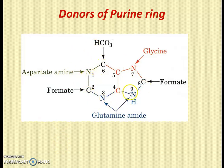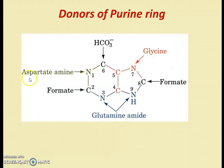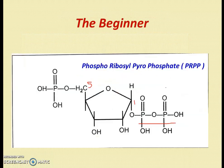The purine ring has nine atoms. Among them, atoms 4, 5, and 7 are donated by glycine; atom 8 is donated by formate; nitrogens 3 and 9 are donated by asparagine (aspartate); carbons C2 and C8 are given by formate; carbon at position 6 is given by respiratory carbon dioxide. Both the salvage and de novo pathways begin with phosphoribosyl pyrophosphate (PRPP).